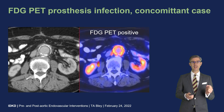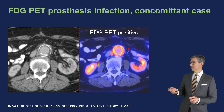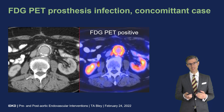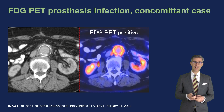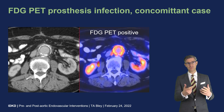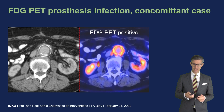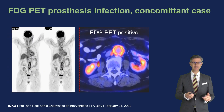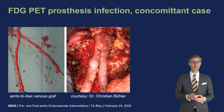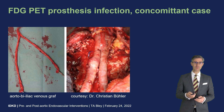In a concomitant case with an infected aortic prosthesis, FDG PET readily revealed vivid FDG uptake in the prosthesis — and interestingly, this was not as well seen on CT. There was no gas bubble, no fluid around it, and no vivid stranding on CT. FDG PET is therefore much more sensitive in assessing infection of a stent graft or prosthesis. This patient also needed surgery; the prosthesis was removed and an aorto-bi-iliac venous graft was inserted.